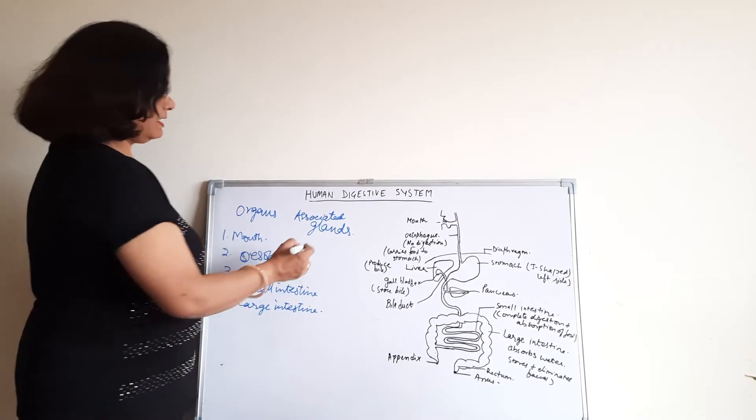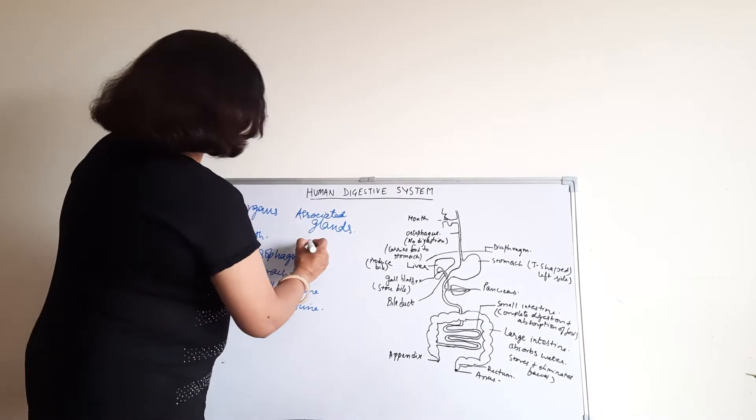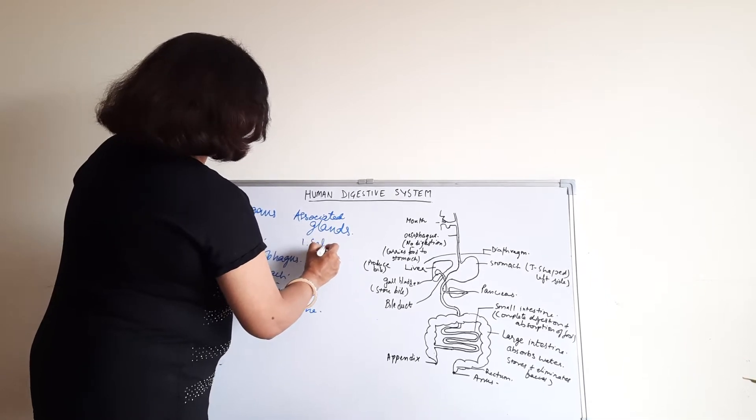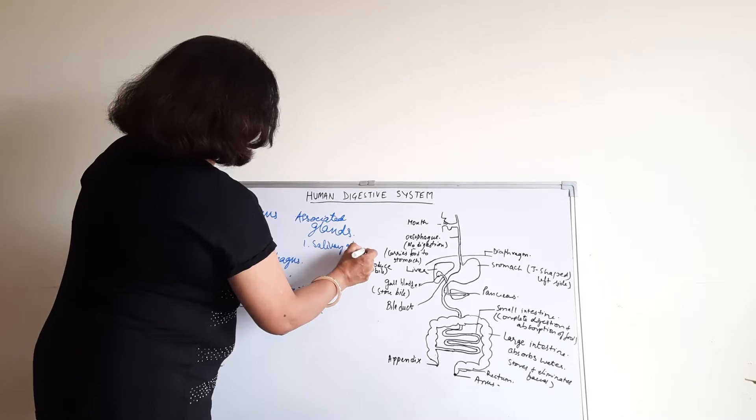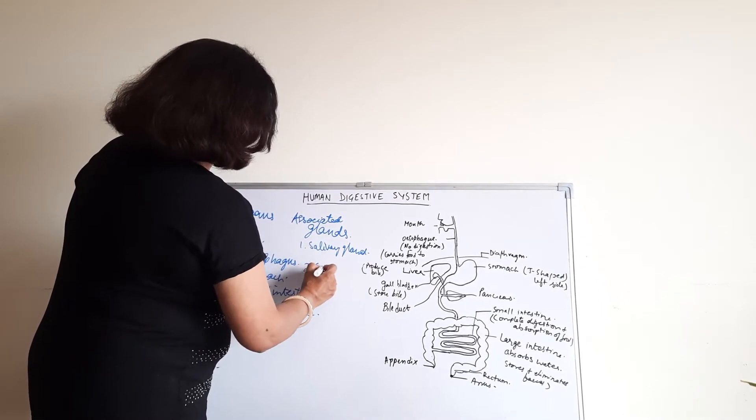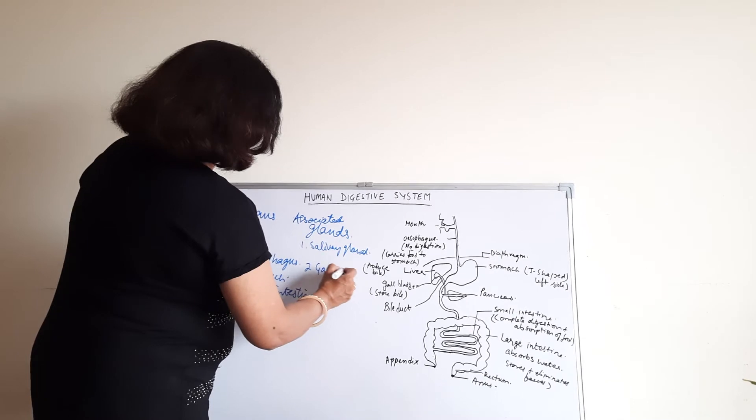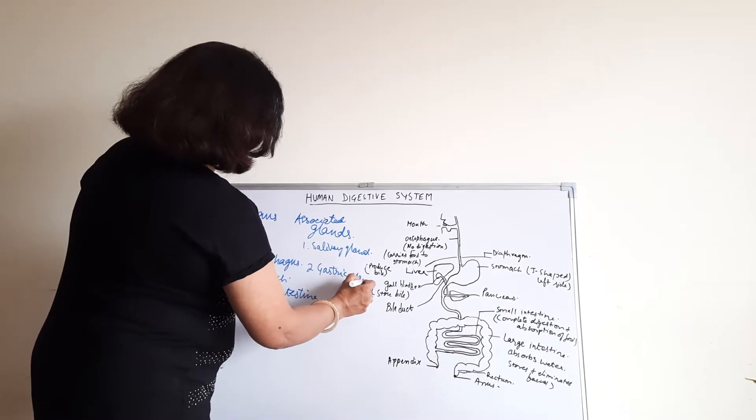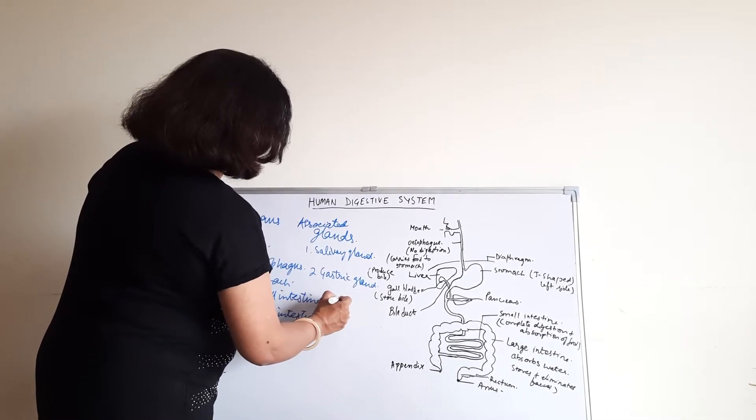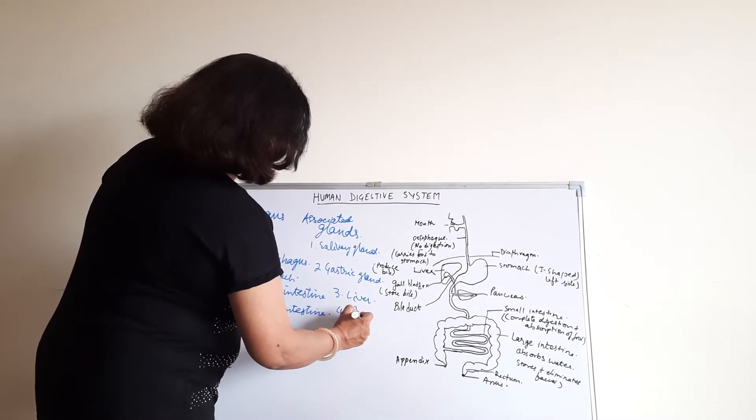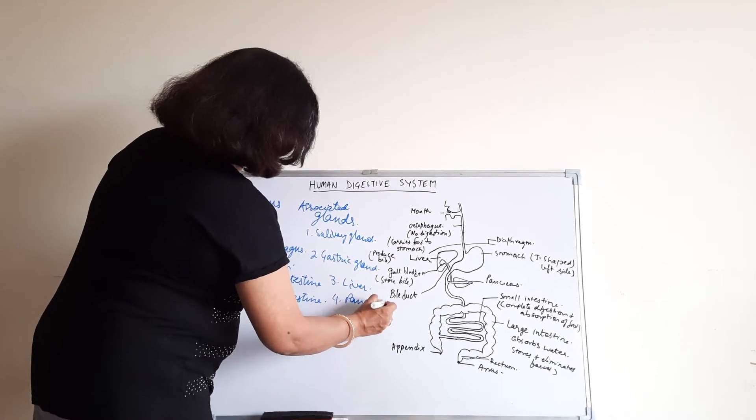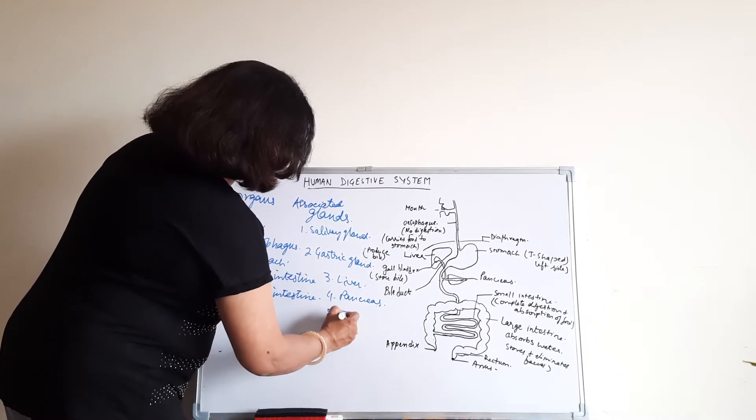And associated glands. Who are they? Salivary gland, gastric gland, liver, pancreas, and intestinal gland.